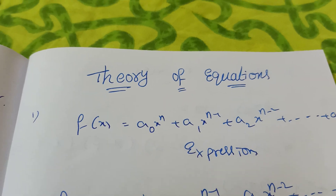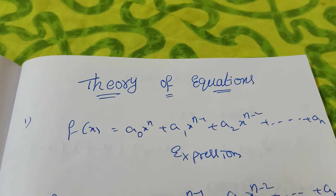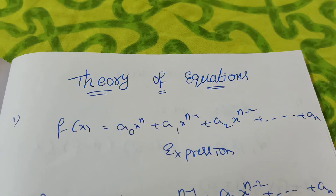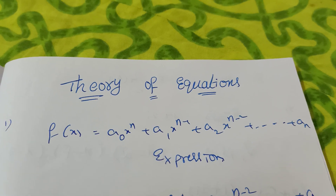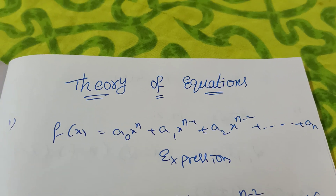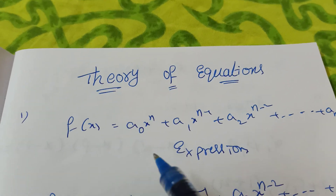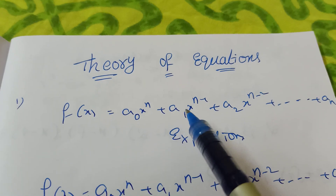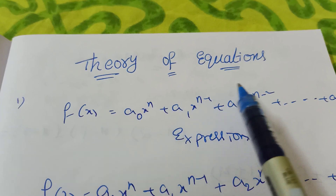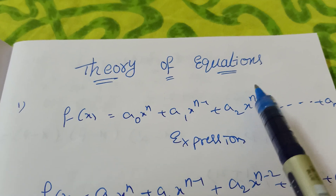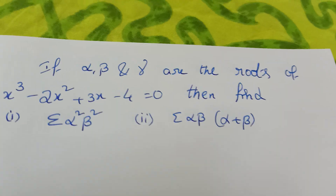Hi students, how are you? Today, Theory of Equations — Alpha, Beta, Sigma, Alpha Square, Beta Square — like that, given how to find that type of questions you should find. Now how to find these questions, we are discussing now. What is the chapter name? Theory of Equations. Yes, now go to questions.